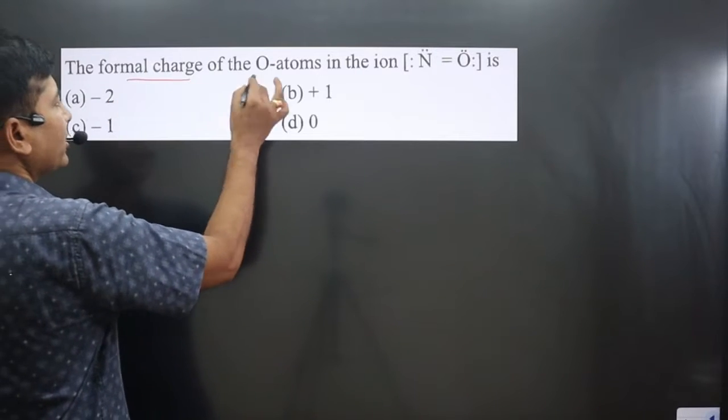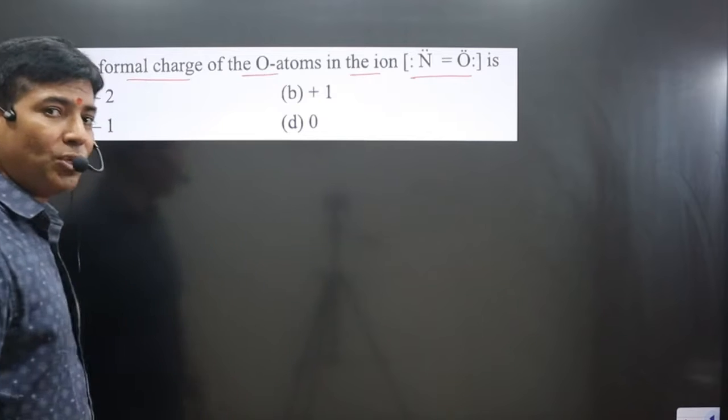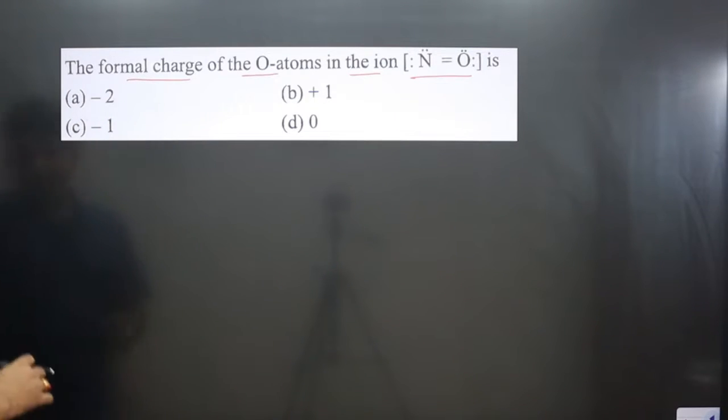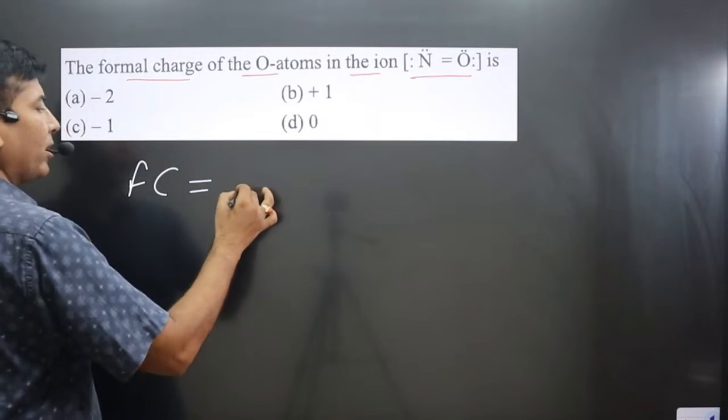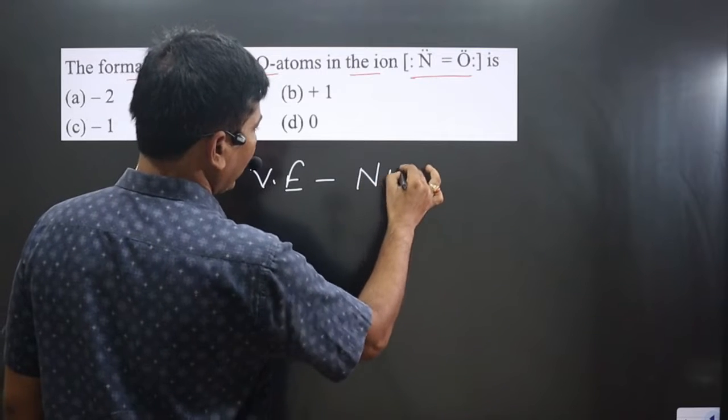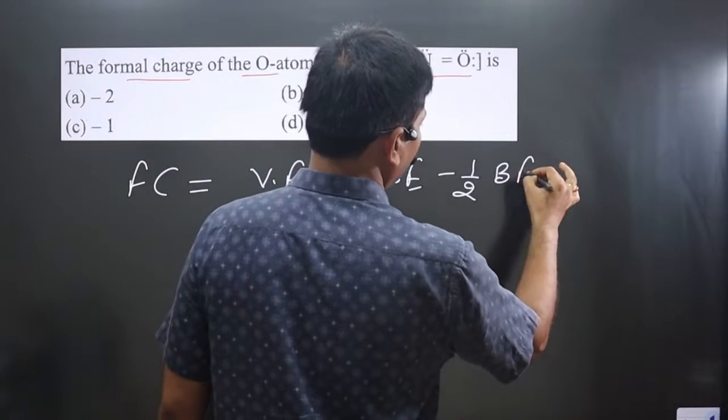The question asks for the formal charge of oxygen atoms in the ion [N = O⁻]. The structure is given. To calculate formal charge, we use the formula: formal charge equals the number of valence electrons minus non-bonding electrons minus one-half bonding electrons.